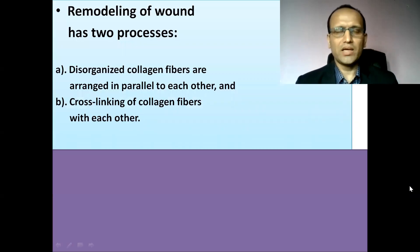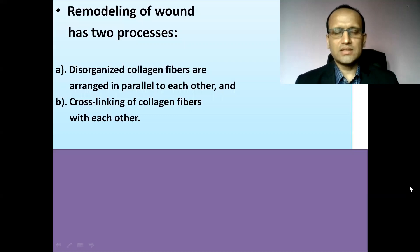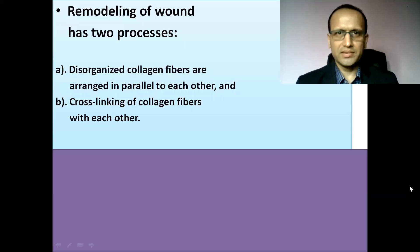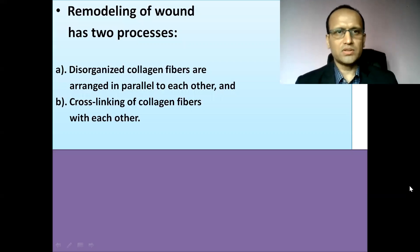Remodeling of wound has two processes. The first process is parallel rearrangement of disorganized collagen fibers. In the second stage of wound healing, collagen fibers are deposited haphazardly in the wound space. The second process of remodeling of wound is cross-linking of collagen fibers with each other.